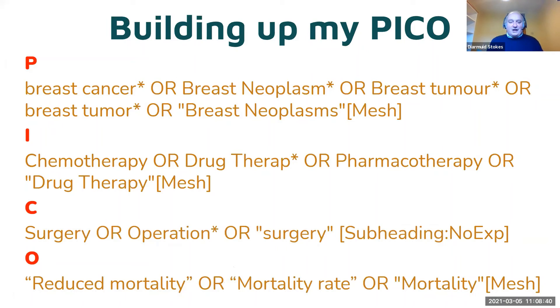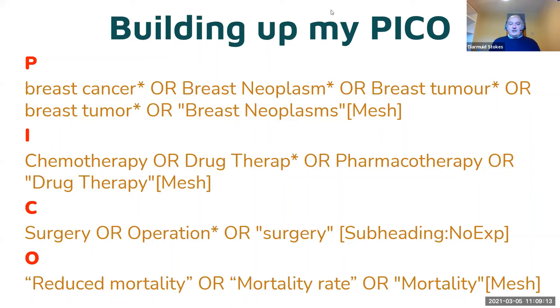When you're running your search, do each search string one at a time. Do your patient search strategy first, then your intervention, comparison, and outcome. Don't look at the results because they all represent only one quarter of your topic. You can use the search history in the database to combine them, and that's when you're interested - because that's where all your search strings come together. Does anybody have any questions about that?